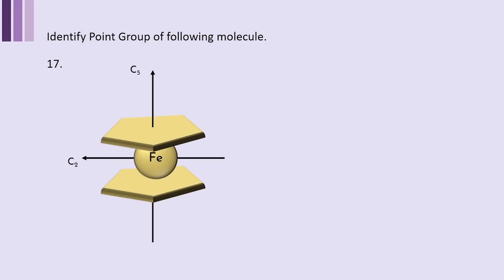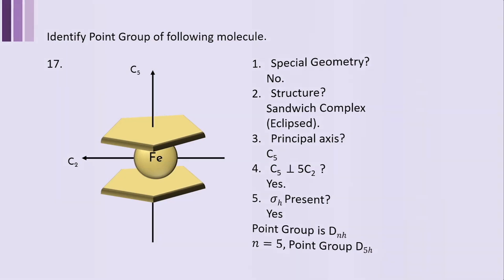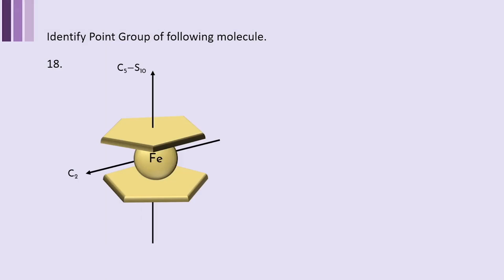This is the ferrocene molecule, dicyclopentadienyl iron, a very beautiful molecule. This is a sandwich complex where iron has been sandwiched into two cyclopentadienyl rings. It has D5H symmetry, and therefore it has a principal axis of C5. C5 is perpendicular to 5C2. It has sigma H. Point group is D and H, and N being 5, it is D5H. Remember this has an eclipsed structure. The staggered conformation would have some different geometry and symmetry.